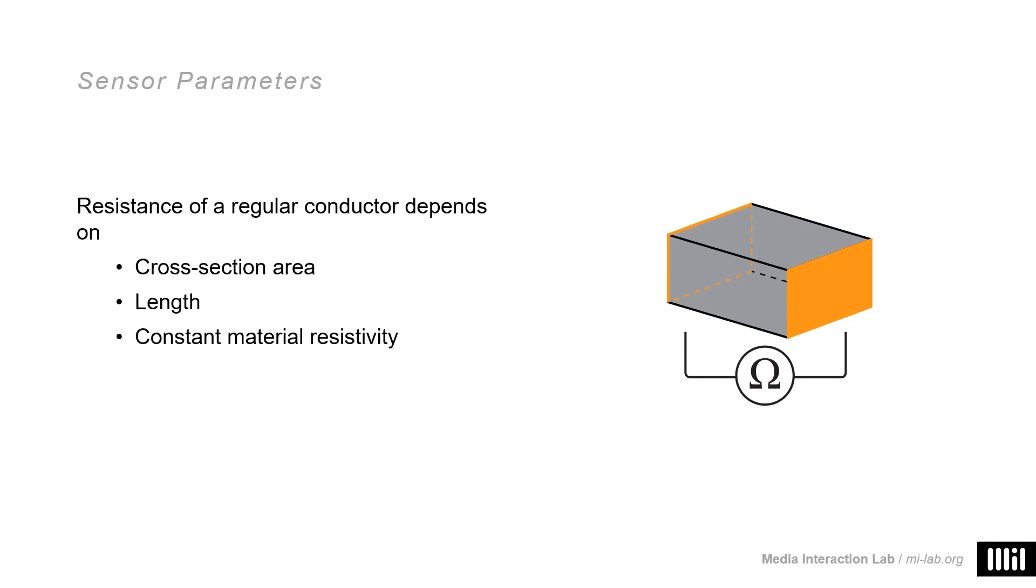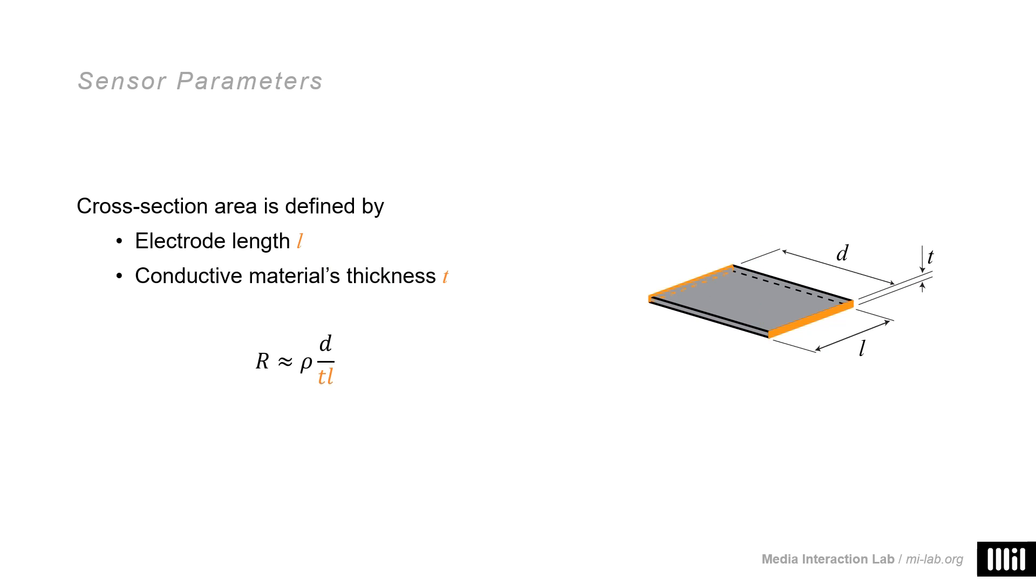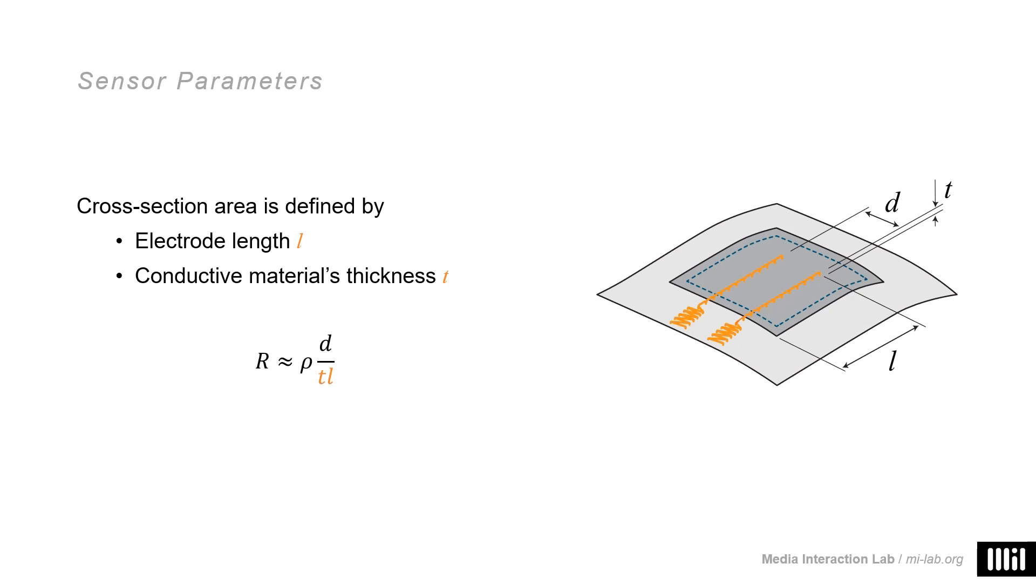We know that the resistance of an electrical conductor depends on its cross-section area, its length, and on a resistivity constant that depends on the actual material. Translating this to our textile sensor, we can see that the contact area A is basically the traces of our conductive yarn, which we approximate with electrode length L times sheet thickness T, while D is simply the distance between the electrodes. We can postulate we use the same material for all of our sensors. Hence, we can summarize material resistivity and thickness to a single constant, RS, which is commonly termed the sheet resistance.